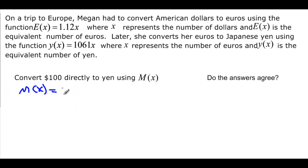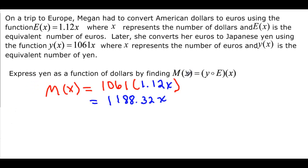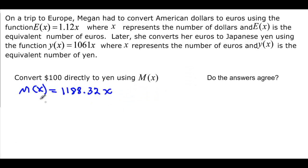So remember that number, because we're going to need to use it here. M of X is equal to 1,188.32X. And we want to convert the dollars. And remember, we have a function of dollars. So that means that this X is going to be dollars. So we want M of 100. When you multiply by 100, you move the decimal two places, and you get 118,832. And do the answers agree? Yes, they do.